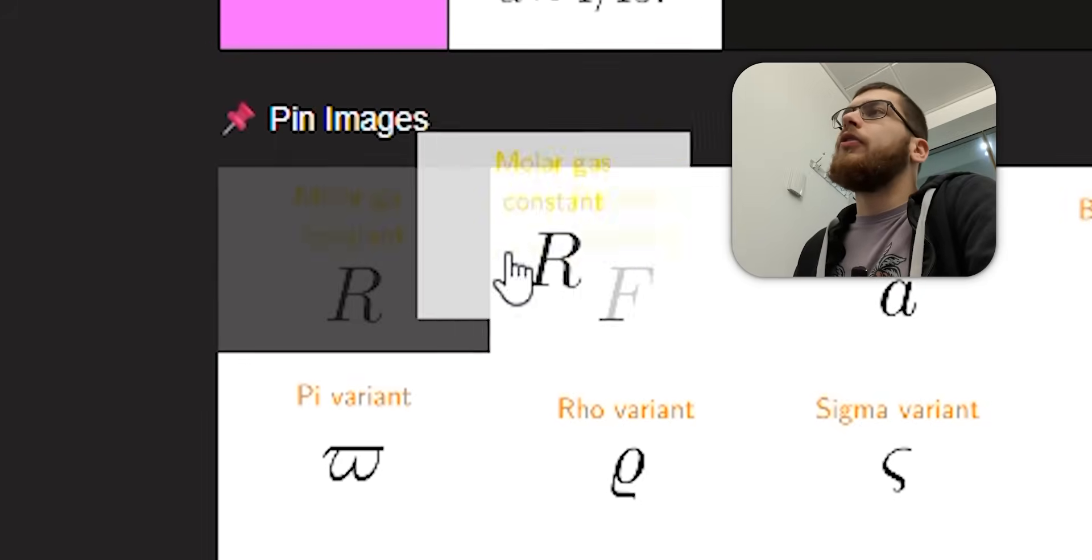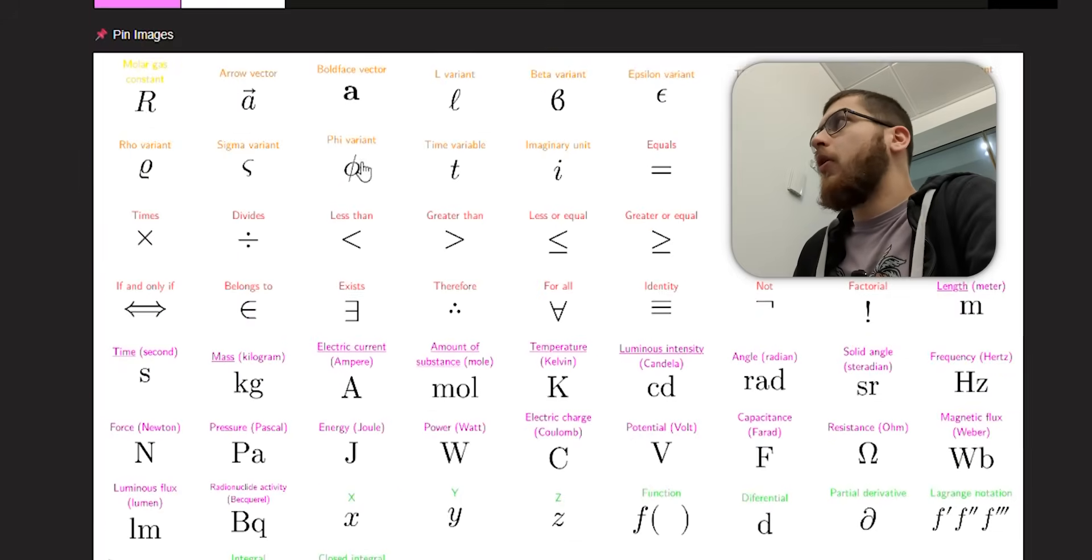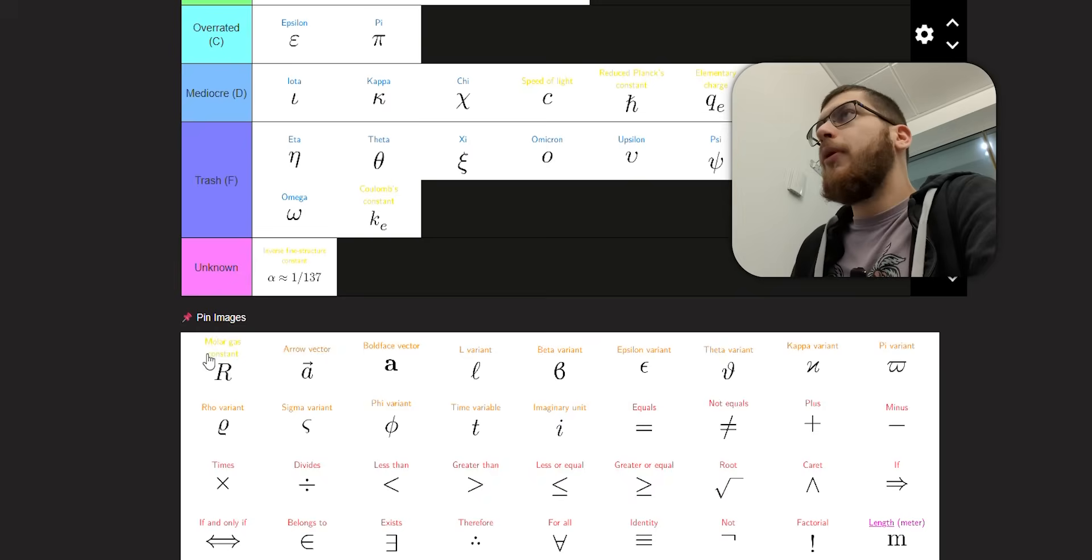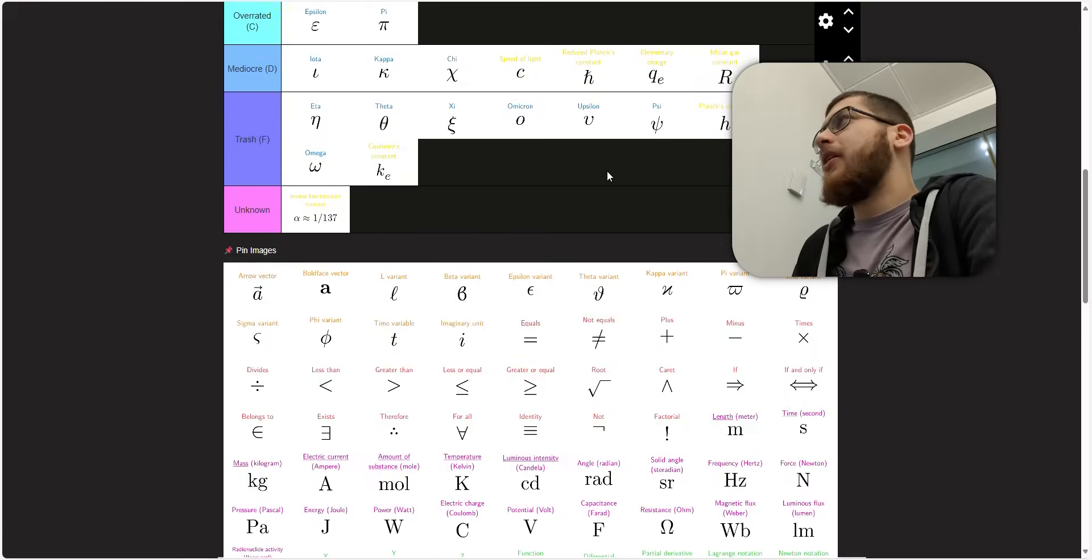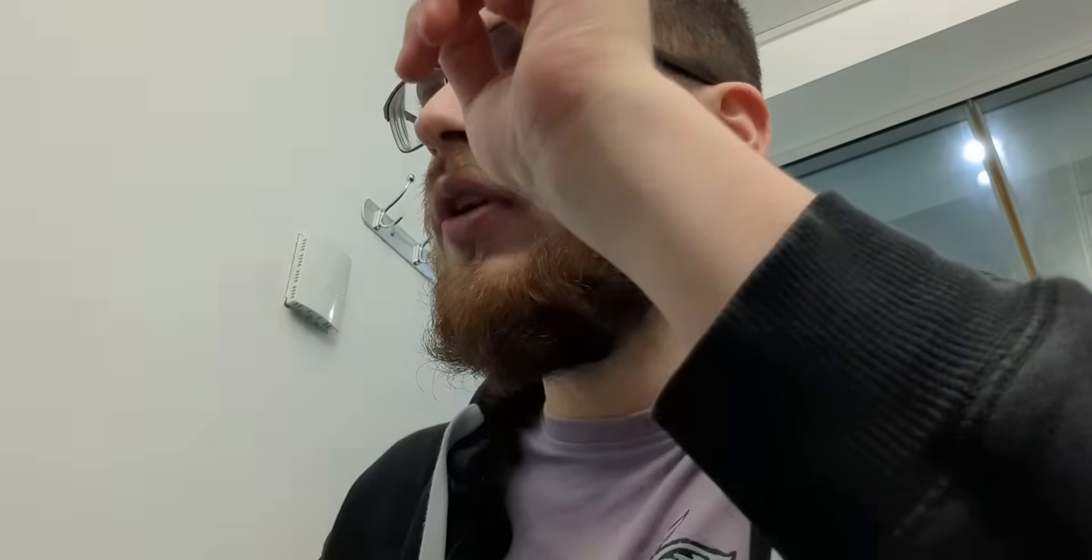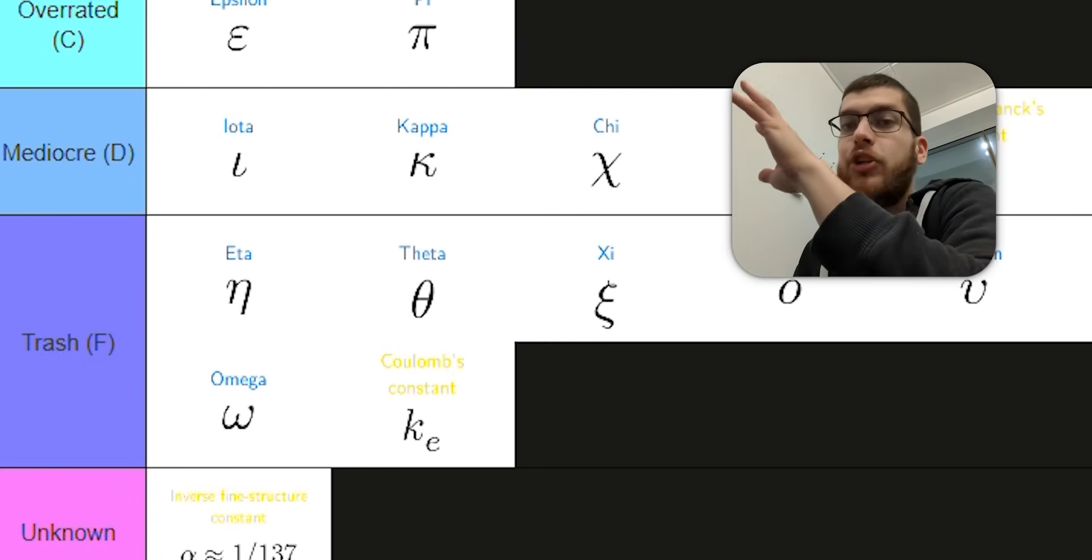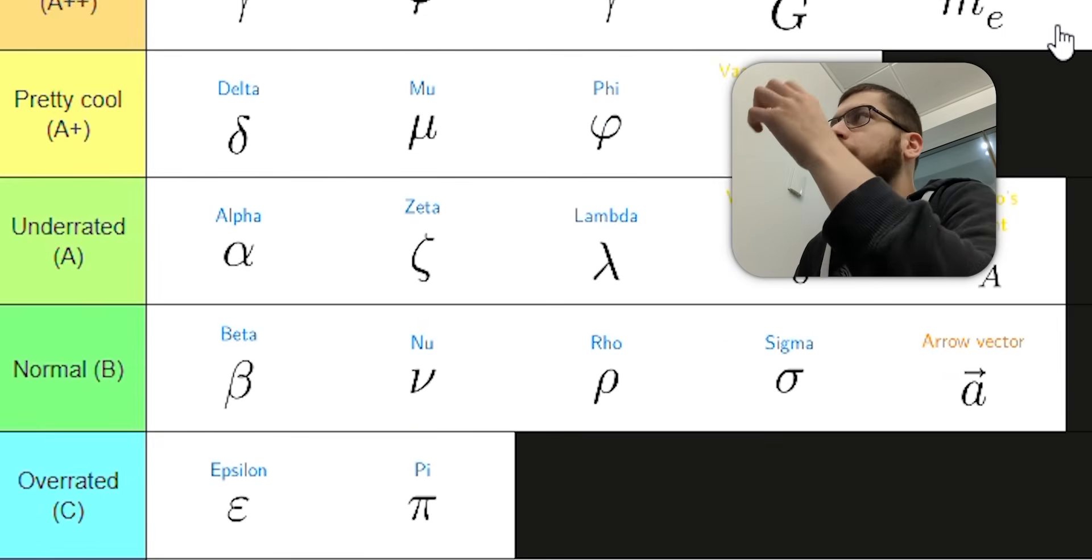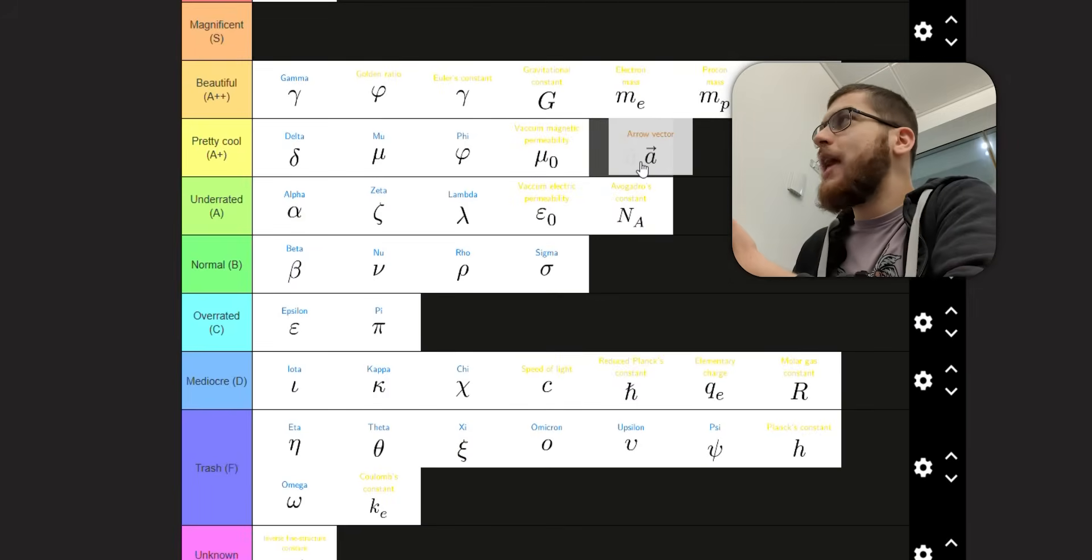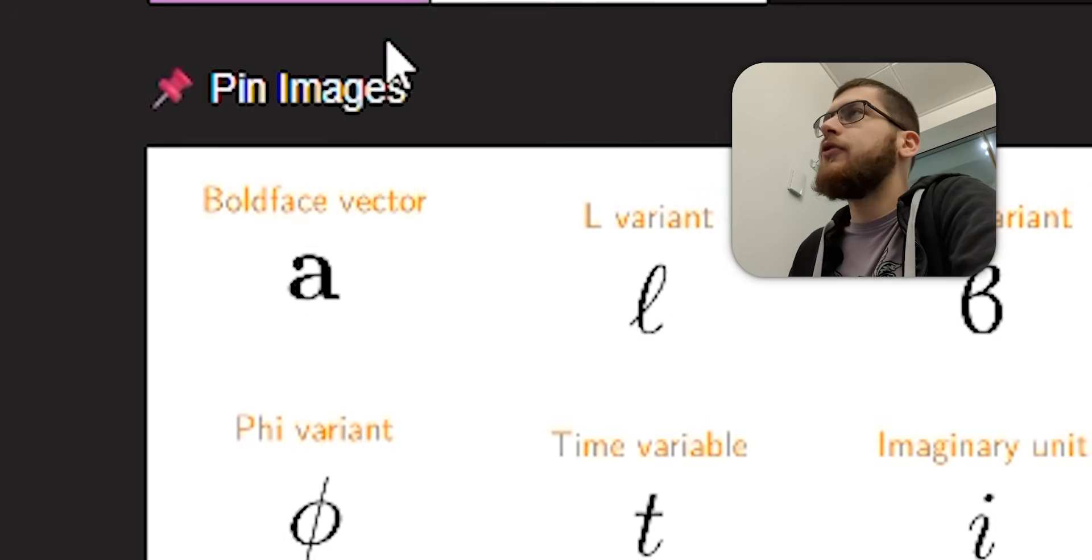Next we've got Molar Gas Constant and Faraday's Constant. Faraday's Constant makes sense. We'll put it in with all the other ones that make sense. But Molar Gas Constant, that's just terrible. Arrow Vector makes perfect sense. Some Americans use an arrow with one tick on the top. In England, a lot of times you just underline it, which I actually think is not very good. Just use the arrow on top. I'm going to say this is magnificent.